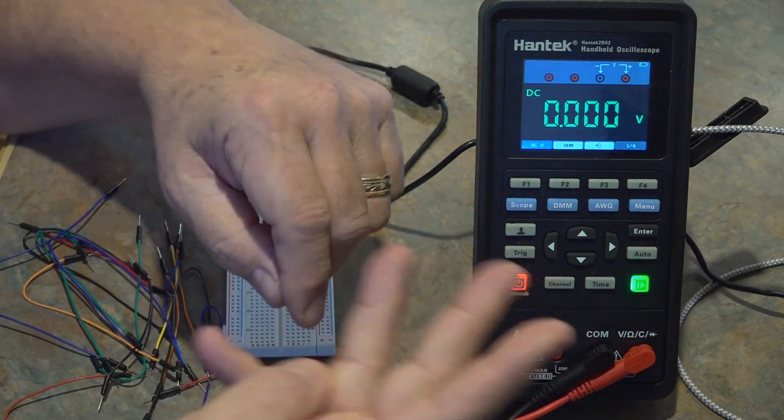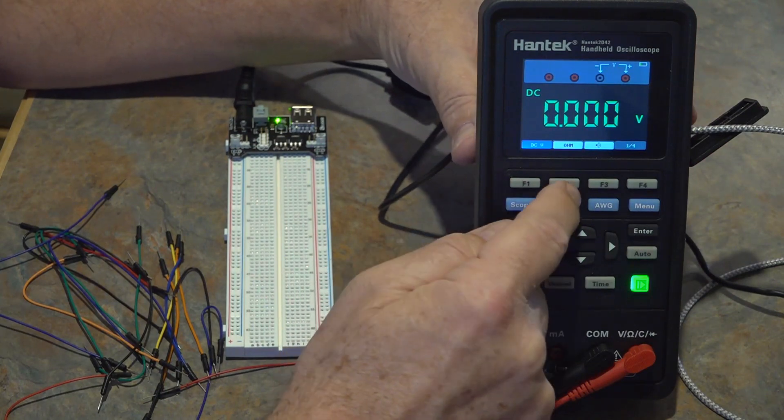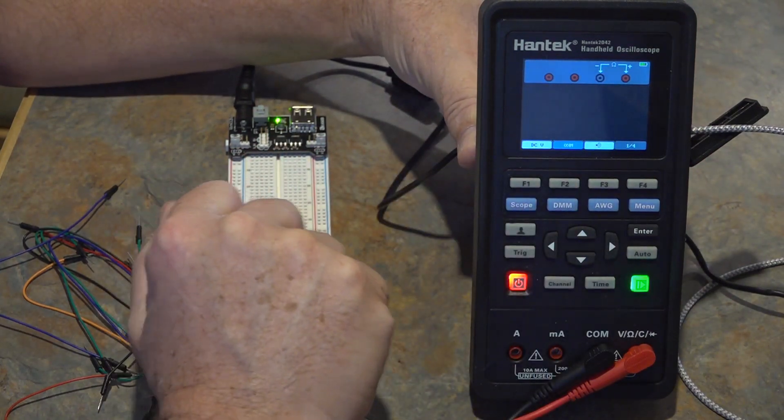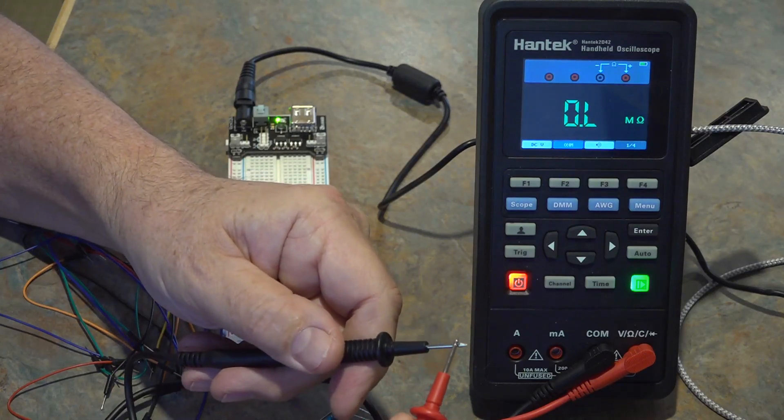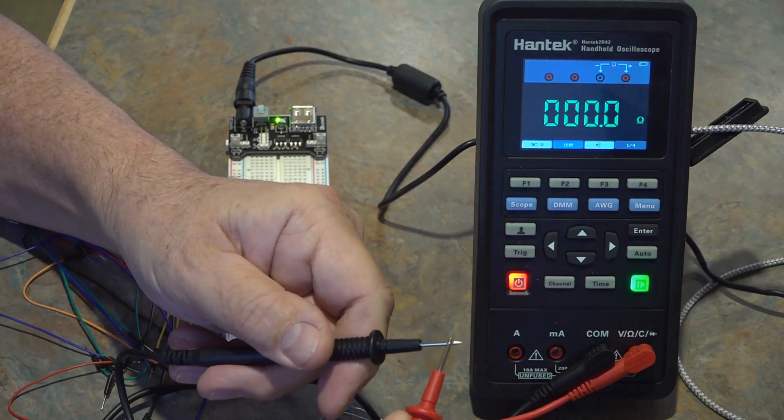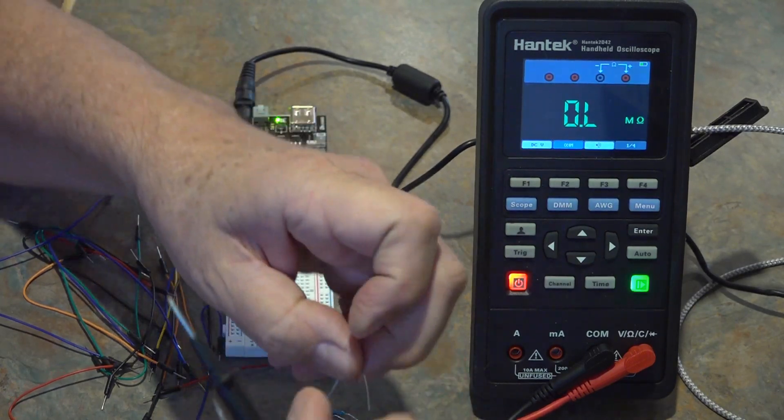Alright so I've also got three resistors that I'll be using and we're going to be checking those out. First off you put the Hantech to resistive mode which is right beside the DC and then you short the two leads together to make sure that you get a zero.